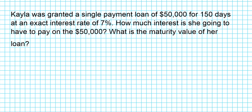Now let's consider the following example. Kayla was granted a single payment loan of $50,000 for 150 days at an exact interest rate of 7%. How much interest is she going to have to pay on the $50,000, and what is the maturity value of her loan? We're going to start by calculating how much interest Kayla is going to pay.